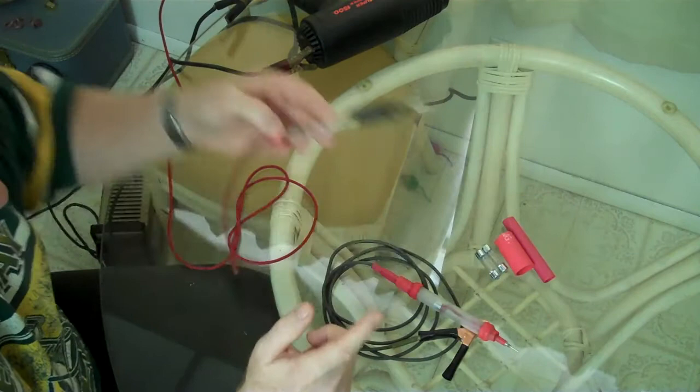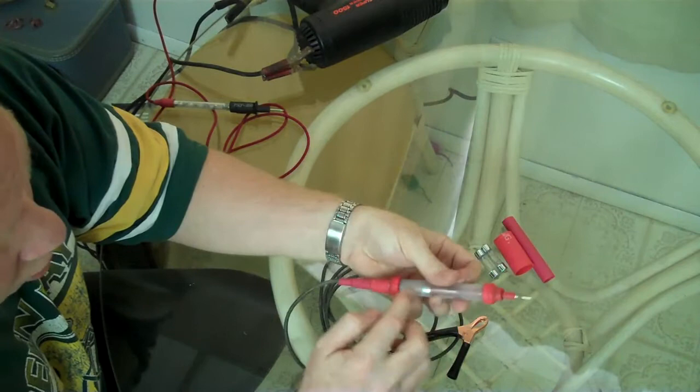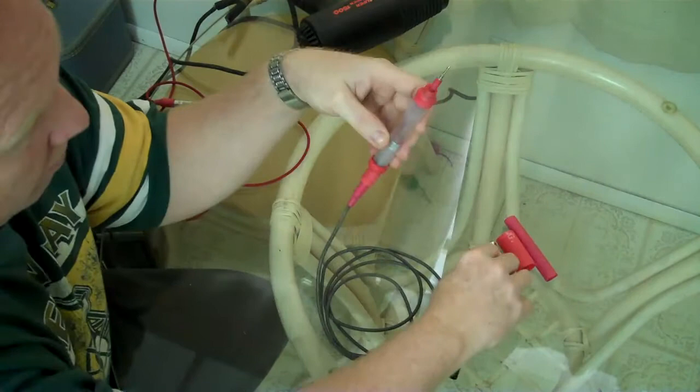But if this burns out, all you'd have to do is cut the heat shrink tubing here and slowly pull the bulb back out of the tube, and unsolder the bulb and put a new bulb in, solder it back on.